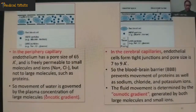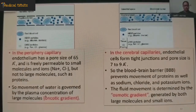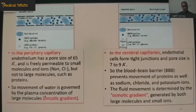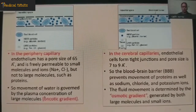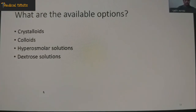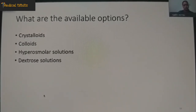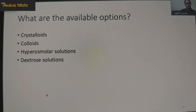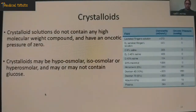Due to this fact, the movement of water in the peripheral tissue is governed mainly by the plasma concentration of large molecules — it is the oncotic gradient that decides water movement in peripheral tissue. In cerebral capillaries, fluid movement is determined by the osmotic gradient generated by both large molecules and small ions. Now, the main topic: the options available for intraoperative fluid management are crystalloids, colloids, hyperosmotic solutions given to reduce cerebral edema, and dextrose solutions.